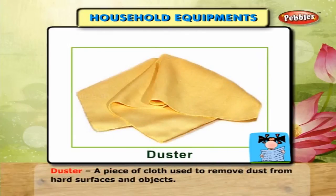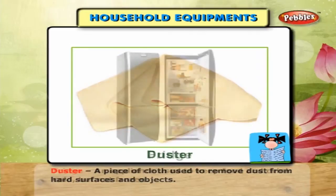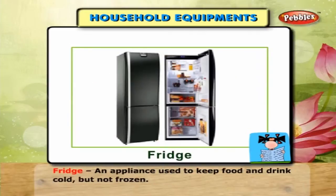Carpet Sweeper — a manual household implement with revolving brushes for sweeping carpets. Duster — a piece of cloth used to remove dust from hard surfaces and objects. Fridge — an appliance used to keep food and drink cold but not frozen.